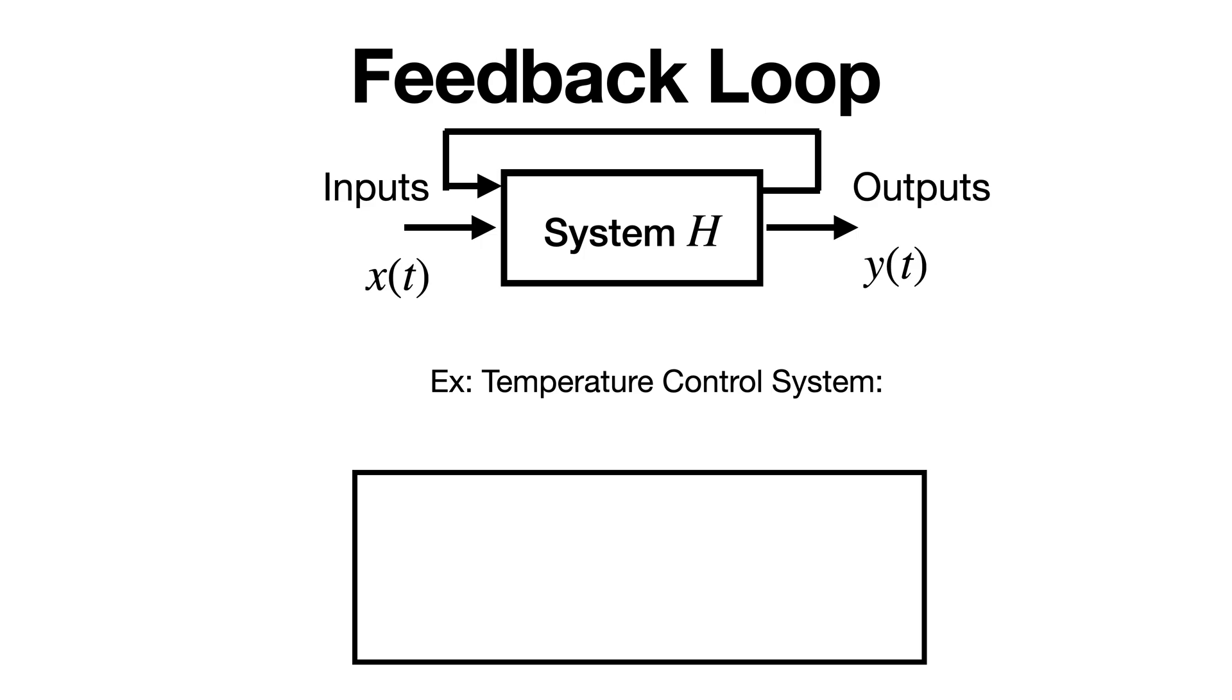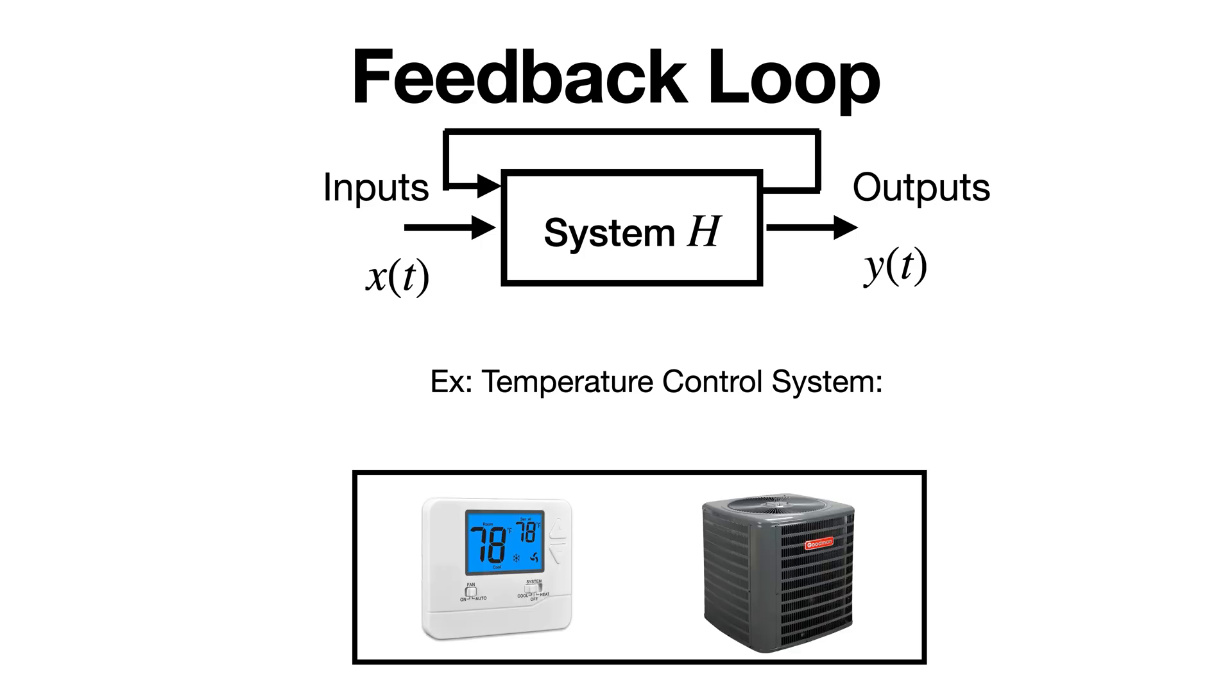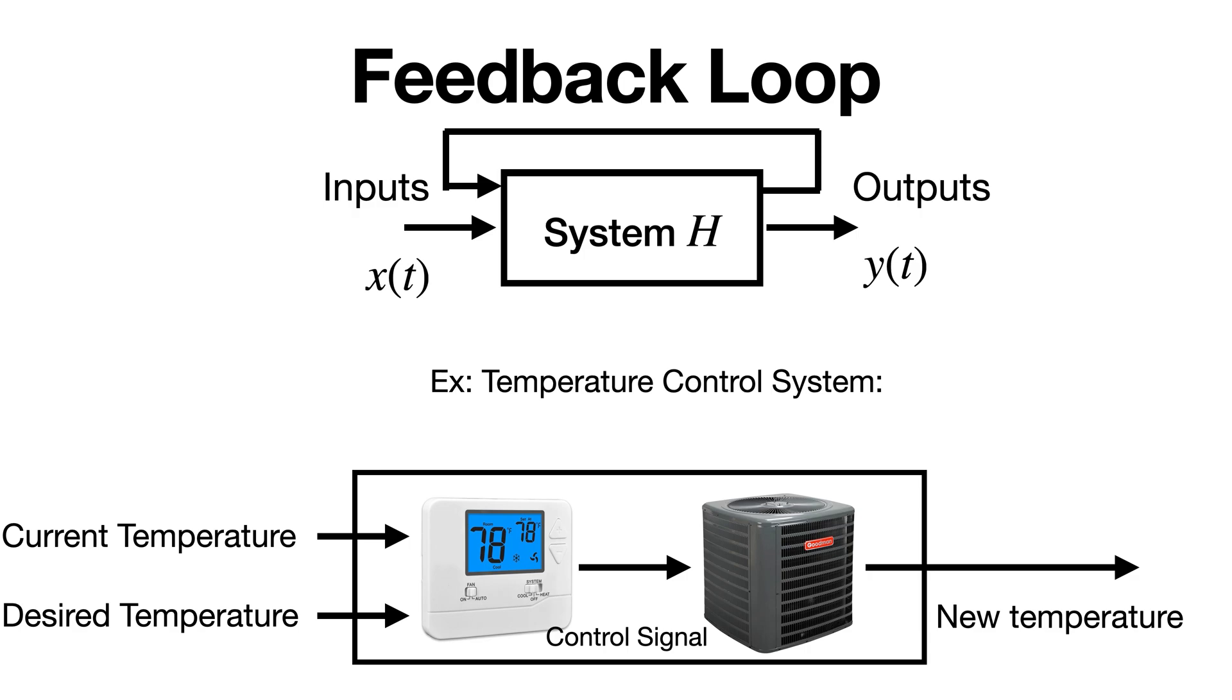One simple example of this is a temperature control system, which is a system that consists of two things: a thermostat and an AC unit. These can each be considered their own systems, but here it makes sense to think of them as subsystems of a larger system. The thermostat takes in the current temperature in the room and the desired temperature, and it outputs a control signal. The AC unit takes in the control signal as its input and changes the temperature. It outputs a new temperature for the room in question. However, this new temperature will become the current temperature in the room, which is then fed back into the system. So if the system is designed properly, this feedback loop will allow the system to stabilize or converge to the desired temperature.